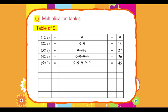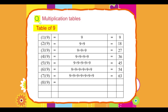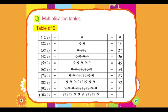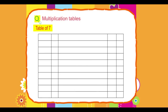5 into 9 equals 45, 6 into 9 equals 54, 7 into 9 equals 63, 8 into 9 equals 72, 9 into 9 equals 81, 10 into 9 equals 90.